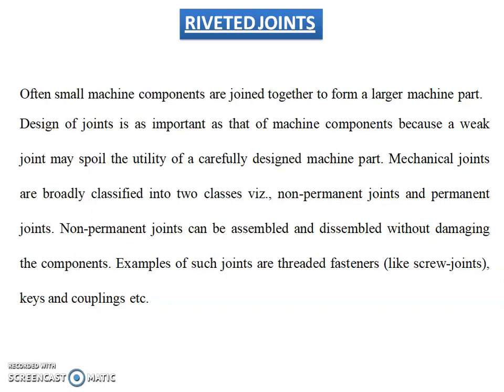If we talk about mechanical joints, generally we have two types: one is the permanent joint and one more is the non-permanent joint. For permanent joints we have two categories — welded joints as well as riveted joints. Non-permanent joints can be assembled and disassembled without damaging the components, like temporary fastenings such as screw joints — bolt and nuts — as well as keys and couplings.